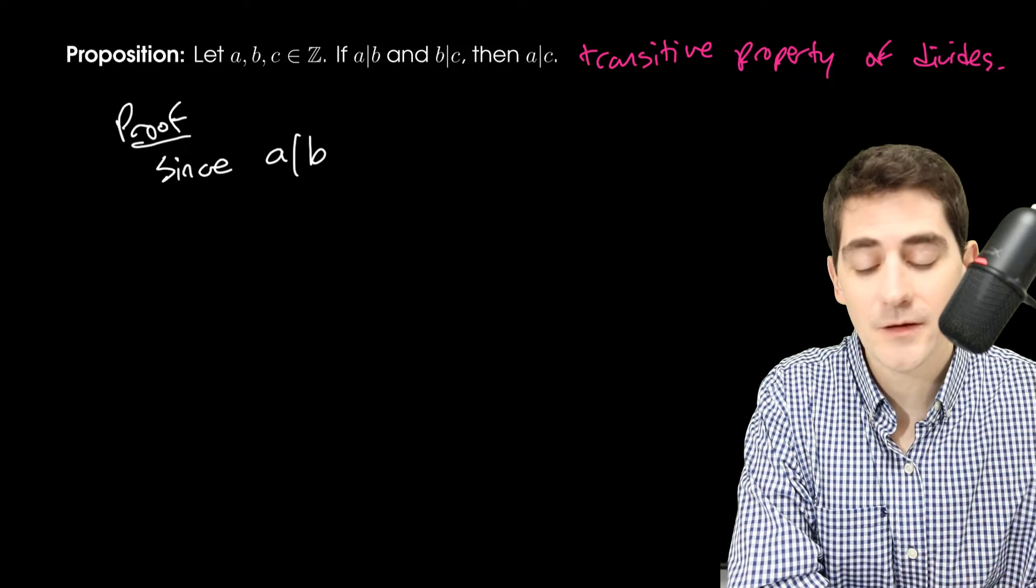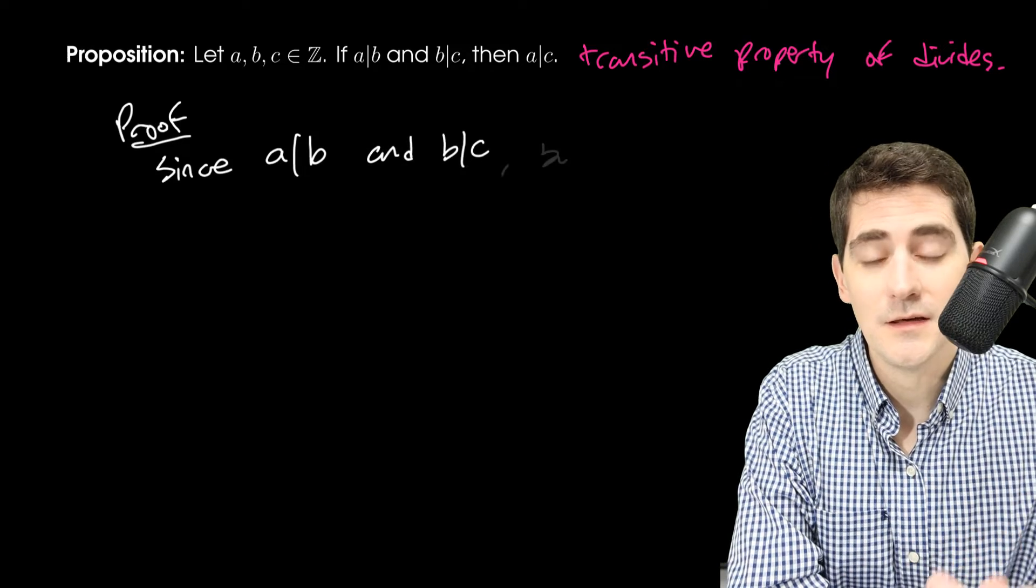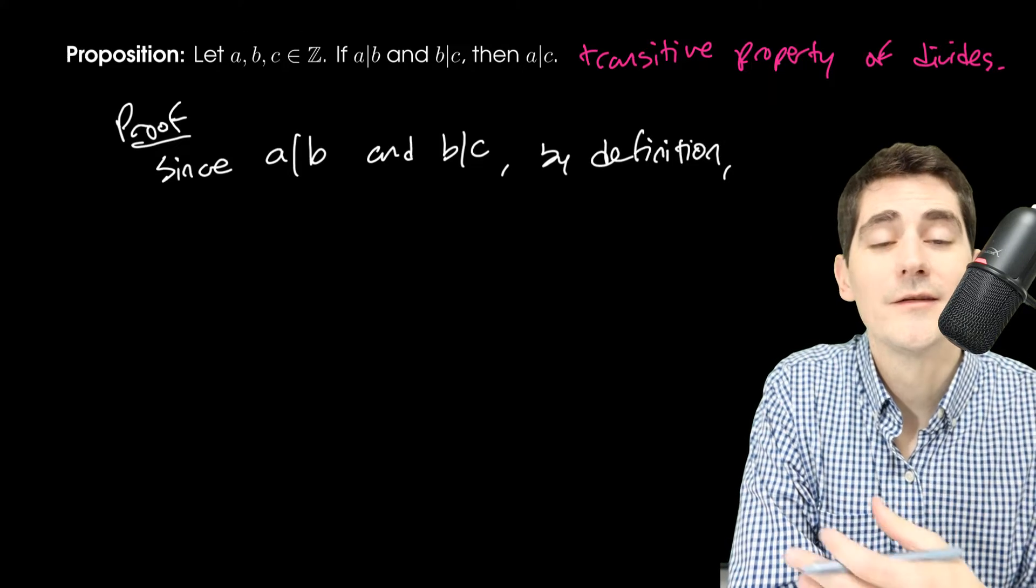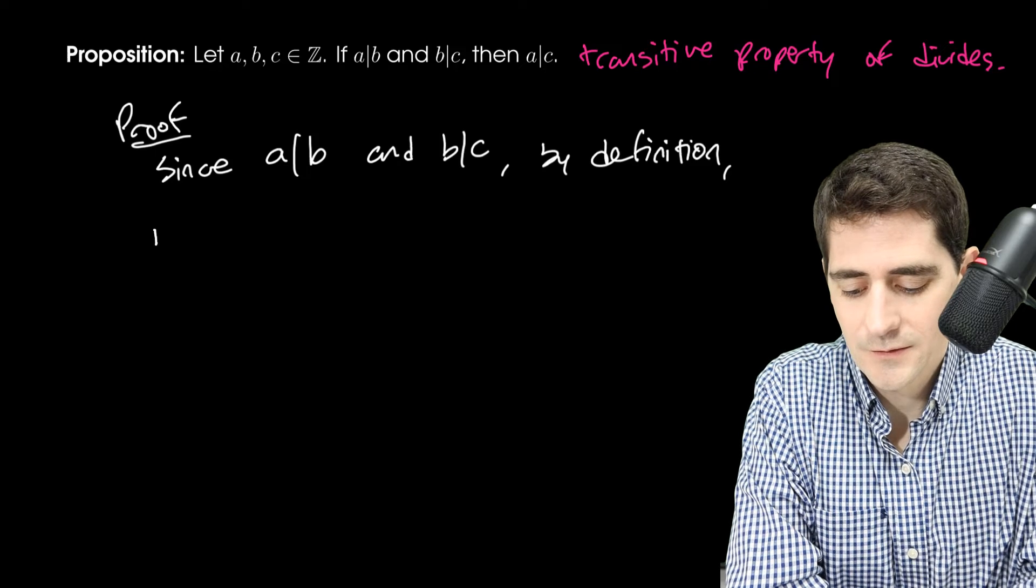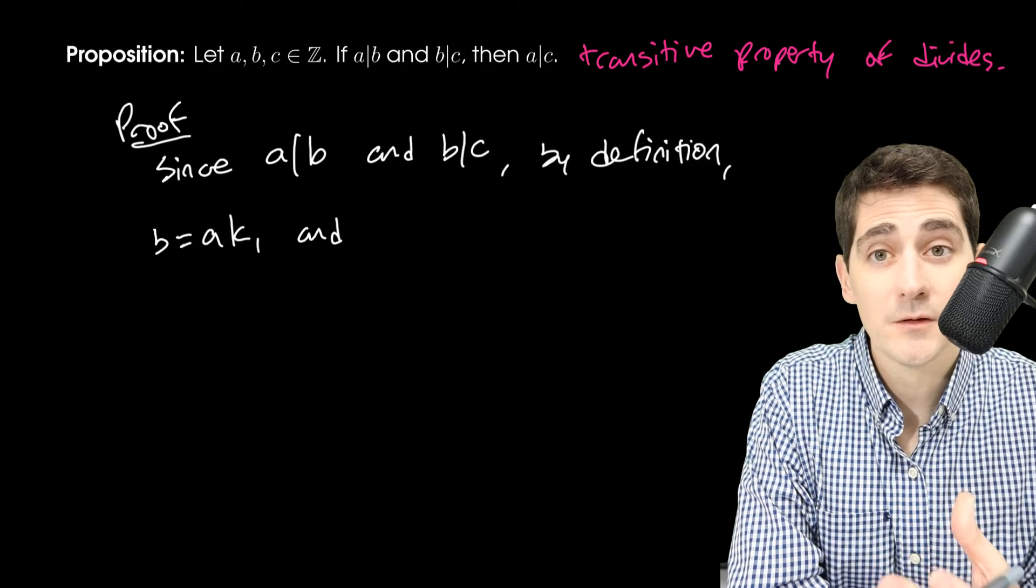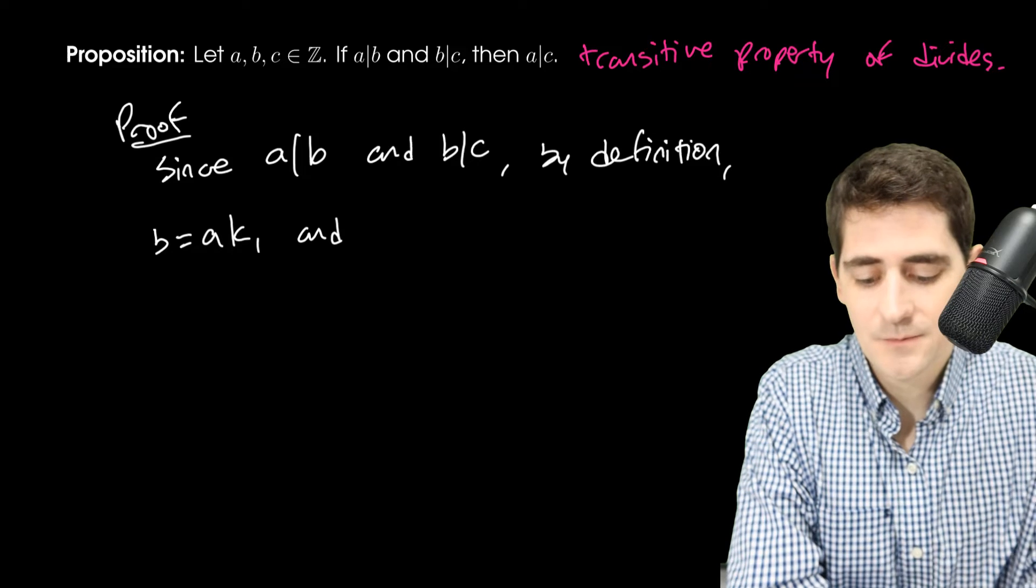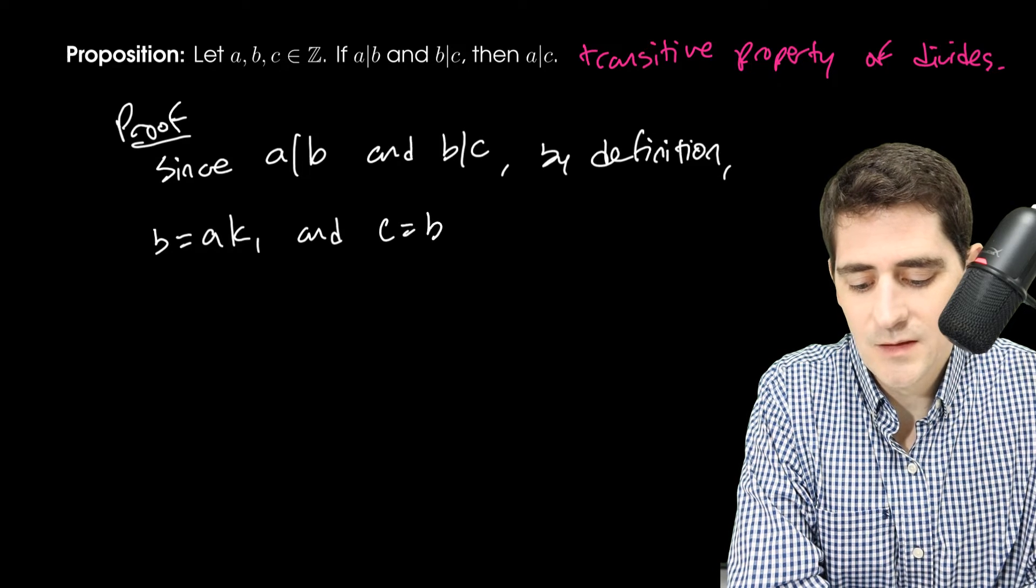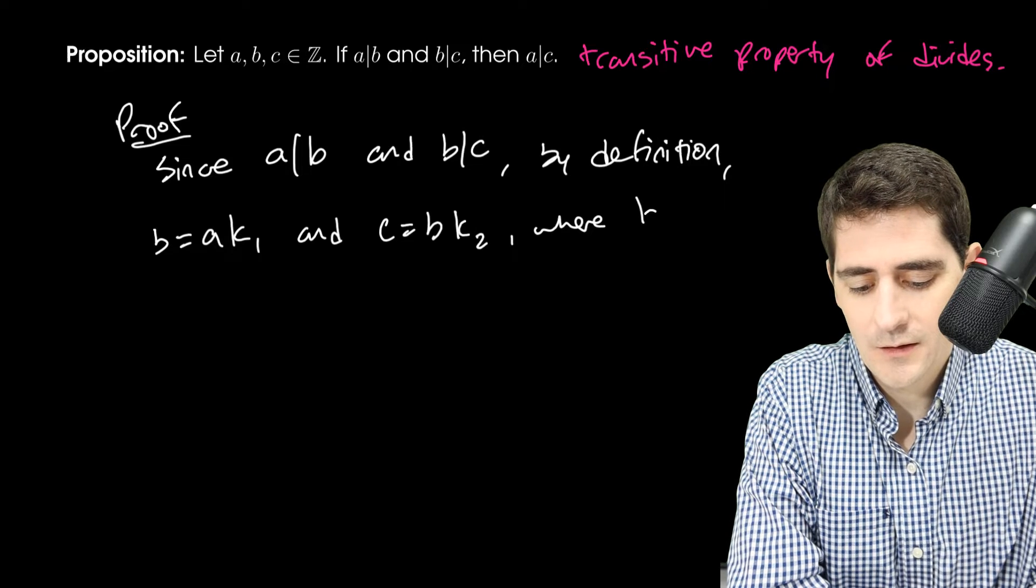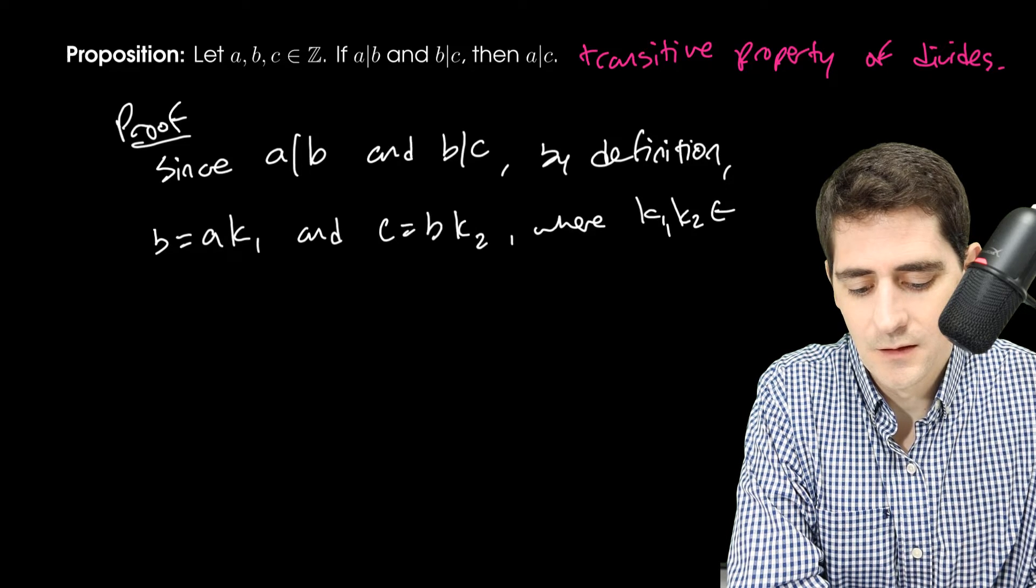We know that A divides B and B divides C. So I'll say since A divides B and B divides C, by definition, well, the definition of divides says that I can write in this case B as A times some integer. So I'll say B is AK1. And similarly, I can do the same with B and C. C is B times K2, where K1 and K2 are integers.